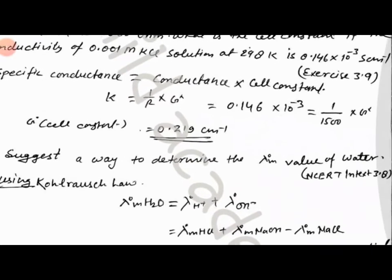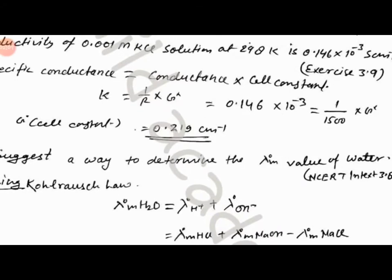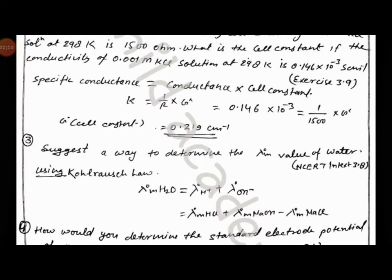Then the cell constant G value will be 0.219 cm inverse.